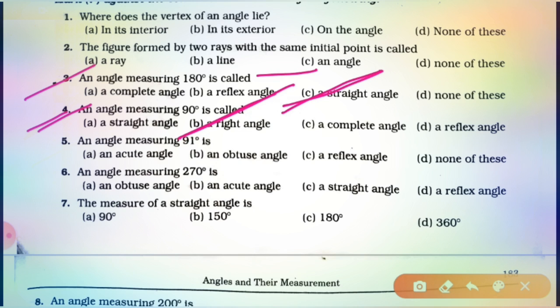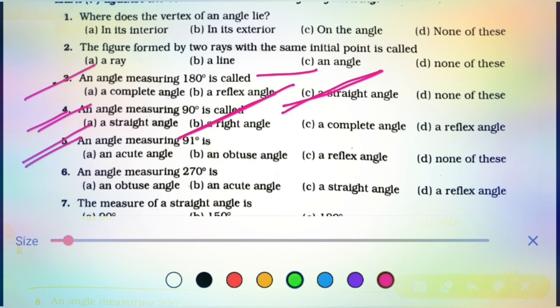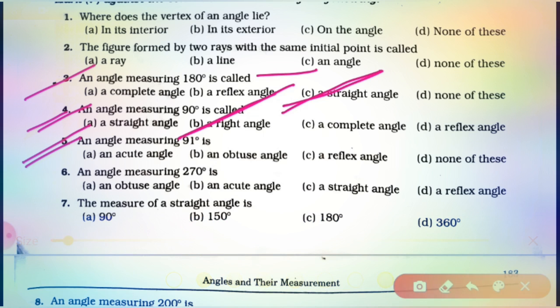Option number B is correct. Now, proceed to question number 5. An angle measuring 91 degrees — you know, an angle whose measurement is more than 90 degrees but less than 180 degrees is known as an obtuse angle. So, students, its answer is obtuse angle. Option B is correct.